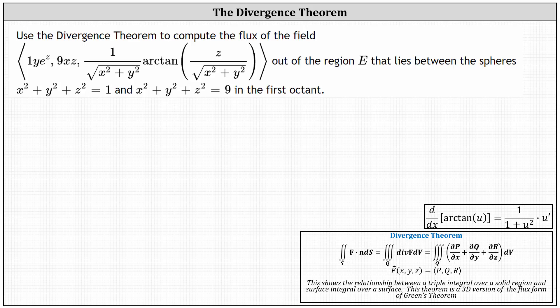Use the divergence theorem to compute the flux of the vector field out of the region E that lies between these spheres: x squared plus y squared plus z squared equals one, and x squared plus y squared plus z squared equals nine, in the first octant.